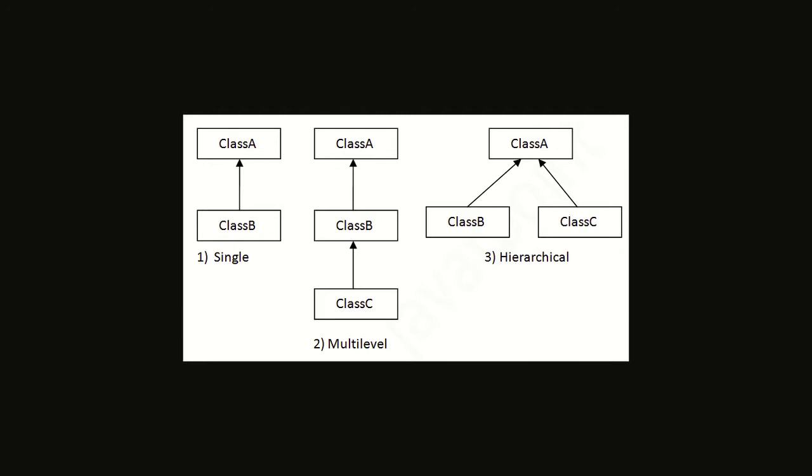Single inheritance we have already seen in our previous video — that is one class extending a second class's properties and behaviors. Like here, class A is extended in class B, so class B is having all the properties and methods of class A. This is single inheritance, that is the simple part.